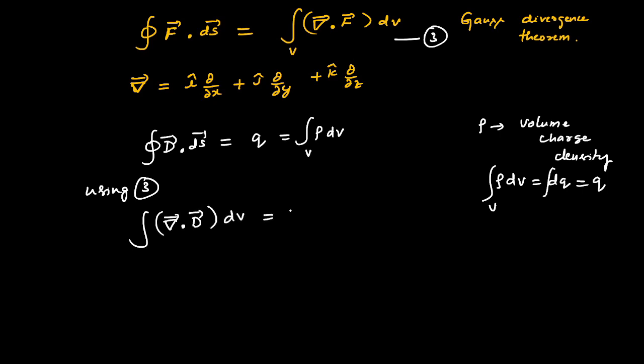By comparison, we can say that divergence of vector D equals charge density, the volume charge density. All we need to do is take the divergence of vector D and we get the charge density. If we know the charge density, we can directly substitute here in this integration to get the total charge.